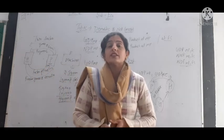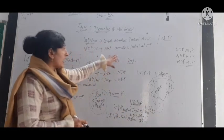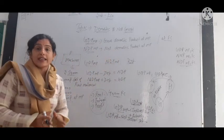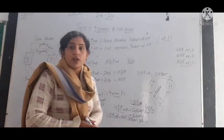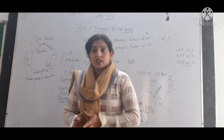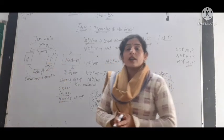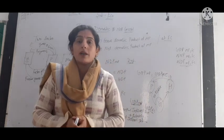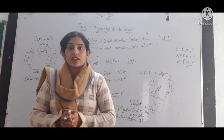So students, this is about GDP at market price, GDP at factor cost, and the net and domestic concept of domestic income and national income. Watch the video and also read this from your book. If you face any problem, you are free to ask. Thank you.